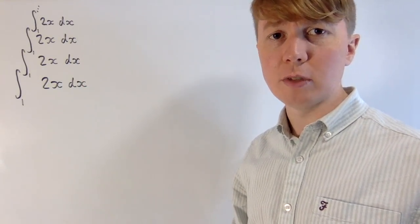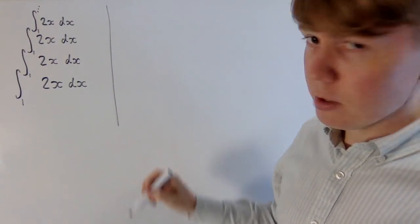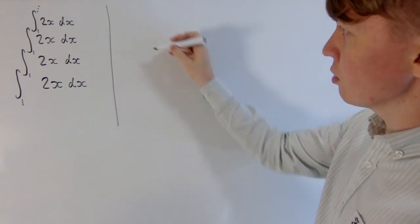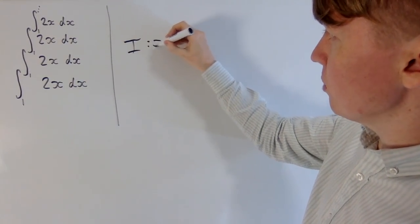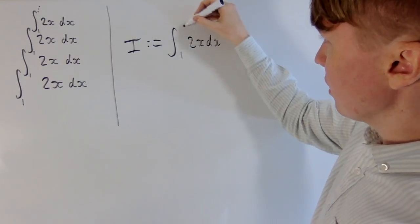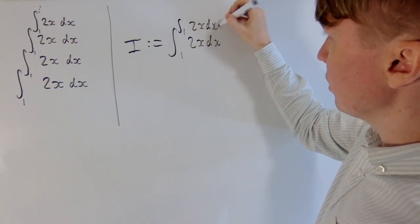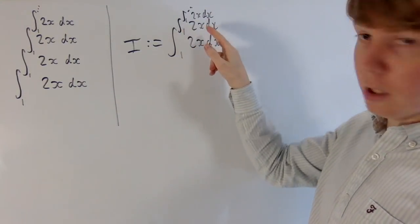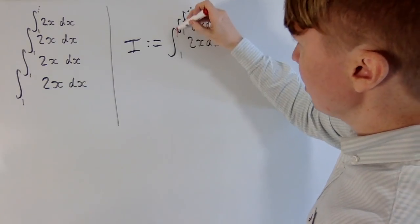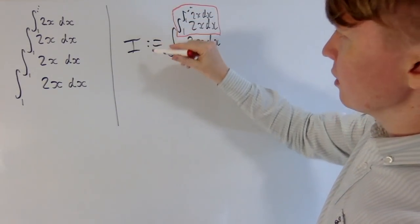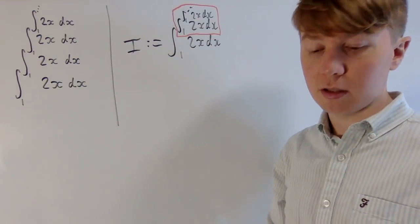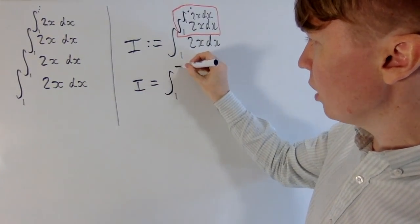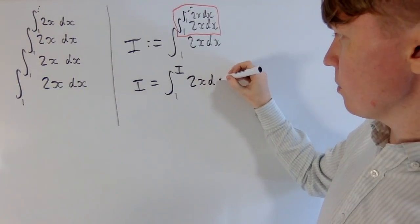So how are we going to actually find a value for this thing? Perhaps if you've seen similar problems before — maybe with infinite stacks of powers — there's a really nice way to do this. Let's define the whole thing to be equal to i. You may notice that the upper limit of integration for the first integral is just a copy of i, the whole stack placed in the upper limit. So now I can write i equals the integral between 1 and i of 2x dx.